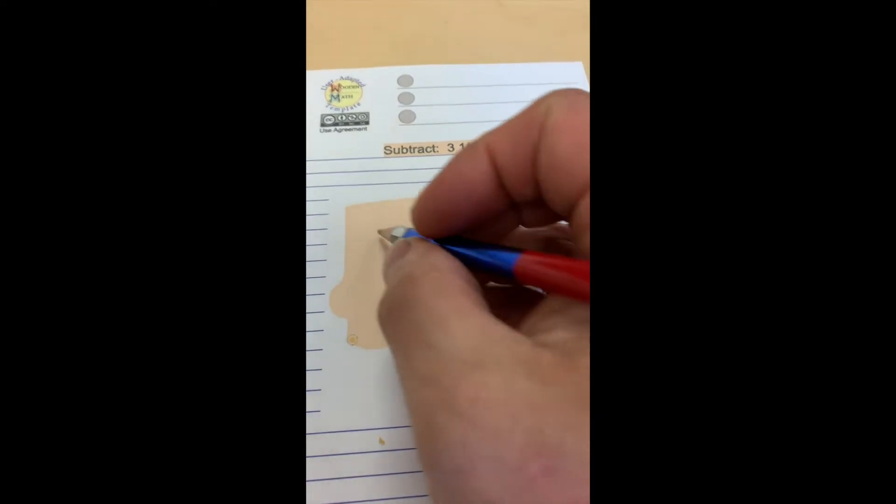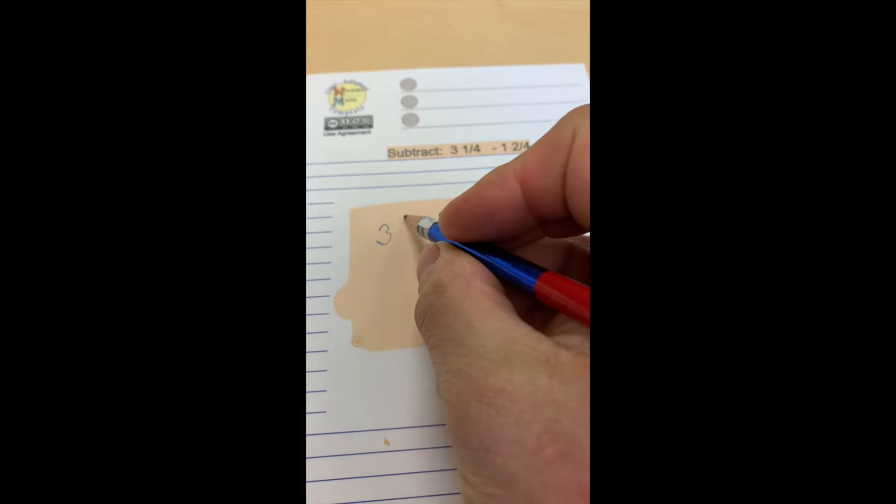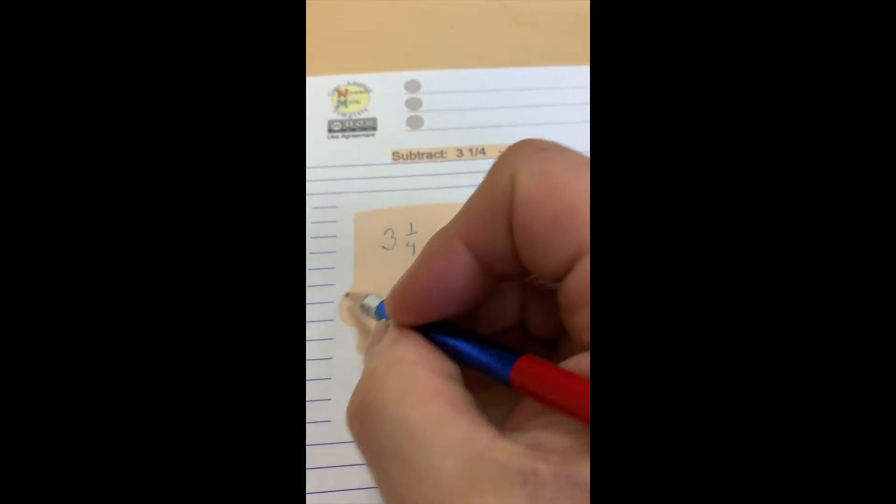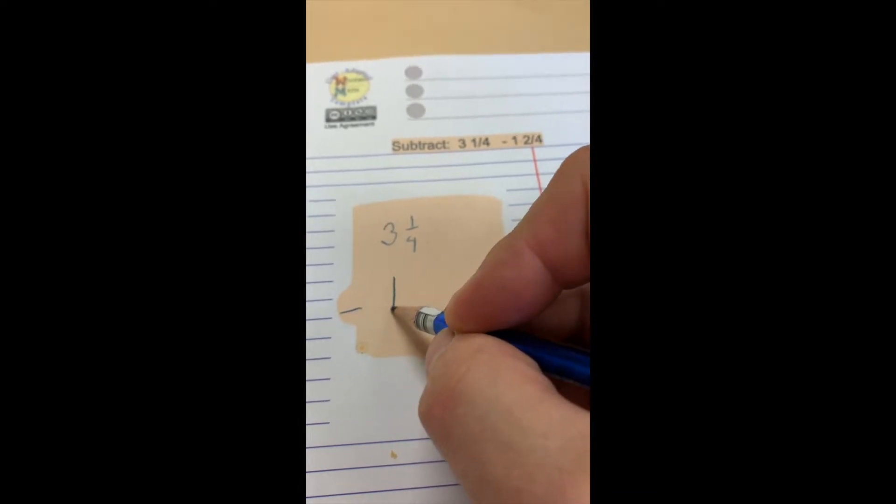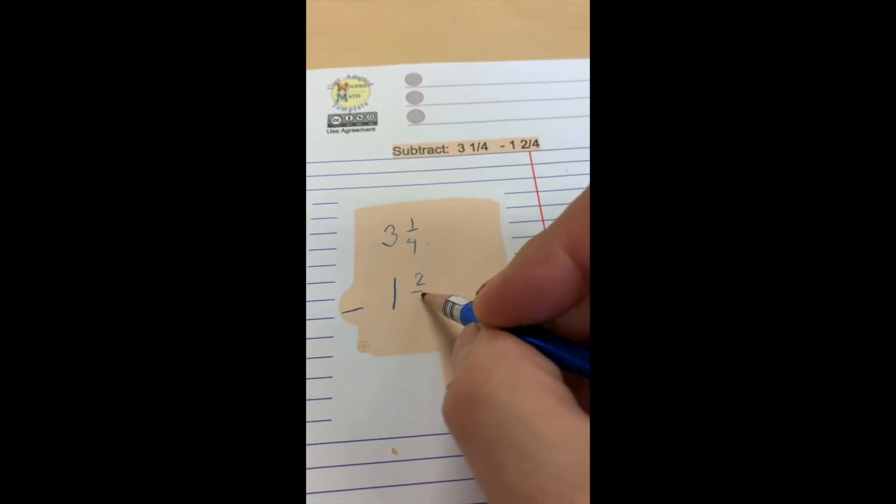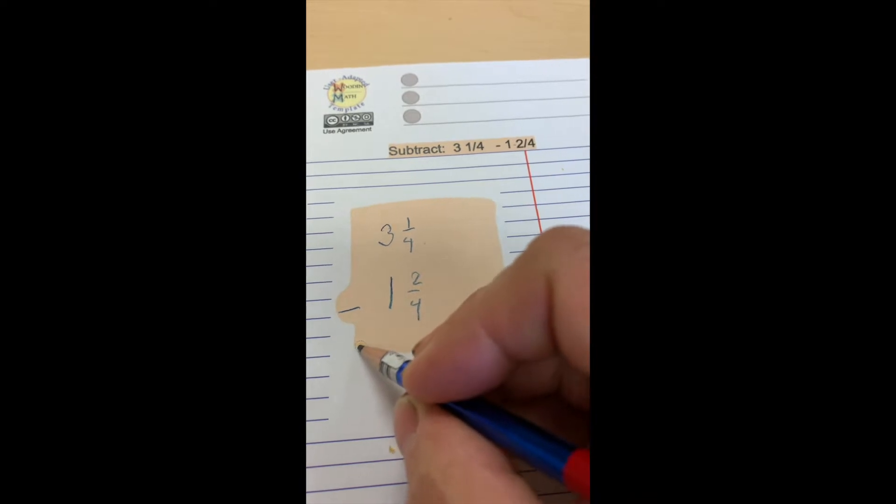So we've got 3 1/4, and we're going to subtract 1 2/4.